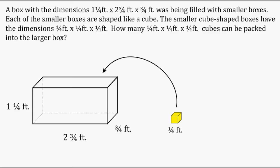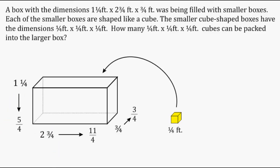To make this problem easier, we're going to start by converting the mixed numbers into improper fractions. One and a quarter is equivalent to five quarters, and two and three quarters is equivalent to eleven quarters. This will be very easy because the edge length of the cube is one quarter.